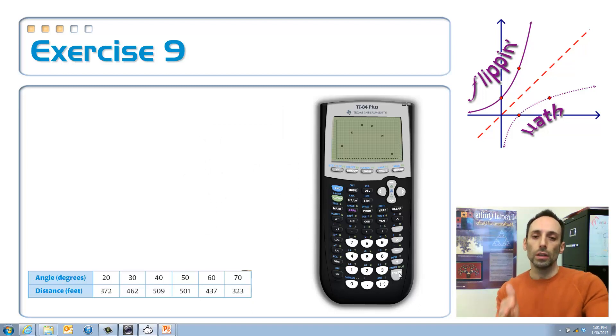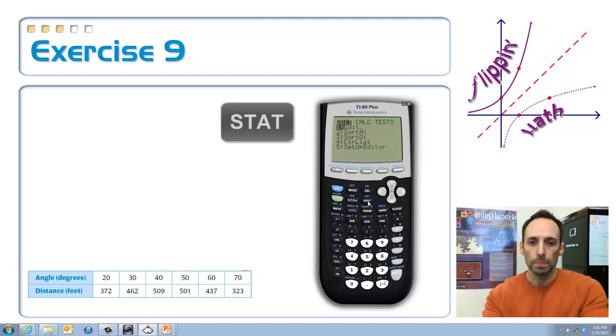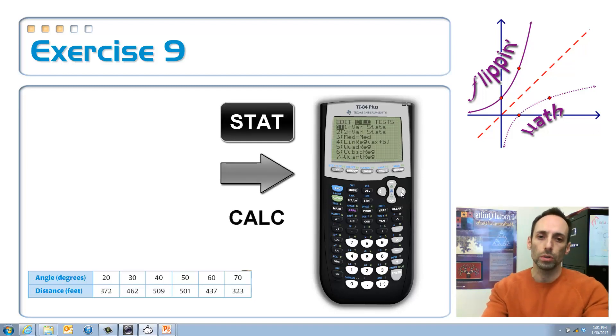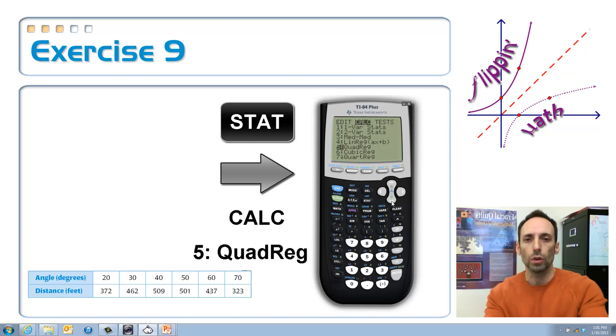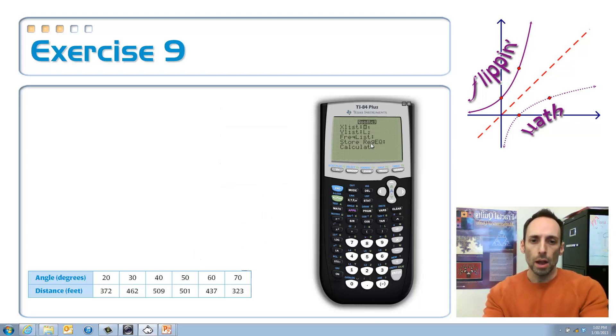All right. The next step is, let's get that parabola that's going to go through those points. So, I go back to the stat menu. Now, not under edit this time, I'm going to scroll over to the calc, which is the calculate menu, where we're going to do all our math. Which one are we going to choose? Look like a parabola. So, we're going to choose quad reg, which stands for quadratic regression. Hit enter.